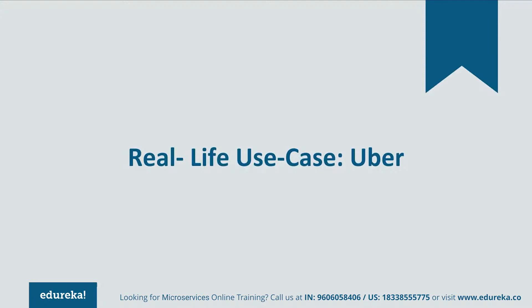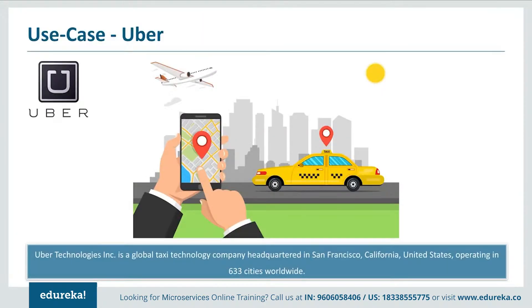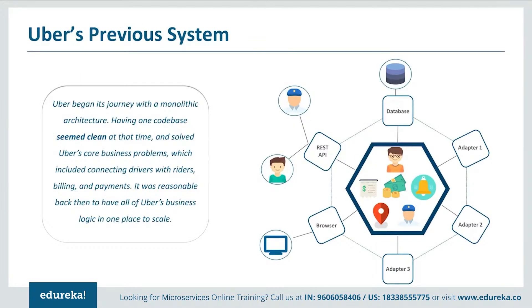Let's look at a real-life use case of Uber. Uber Technologies is a global taxi technology company headquartered in San Francisco, United States, operating in 633 cities worldwide. Like many other startups, Uber also started its journey with a monolithic architecture for a single city.